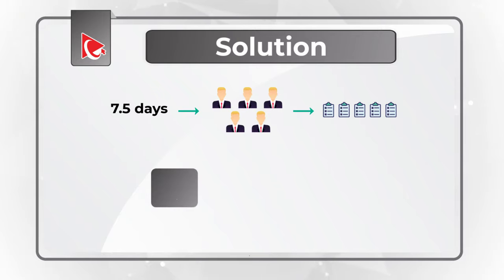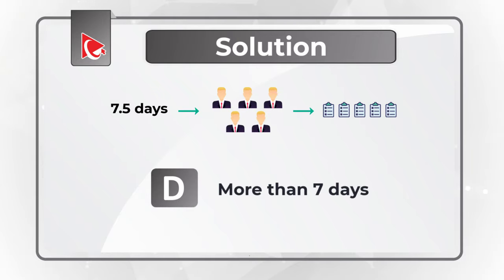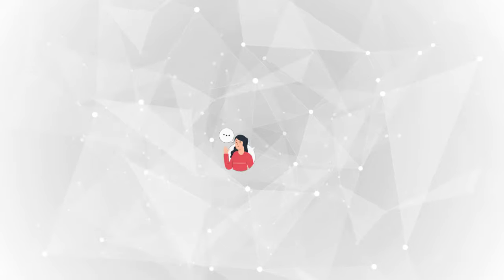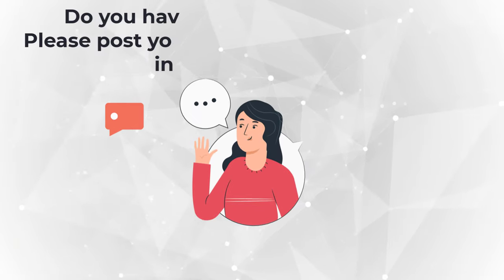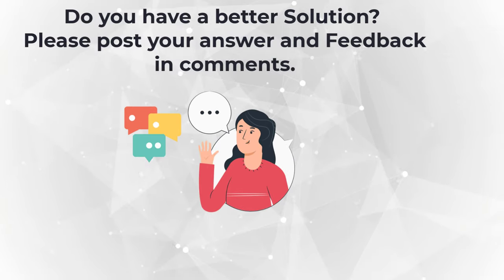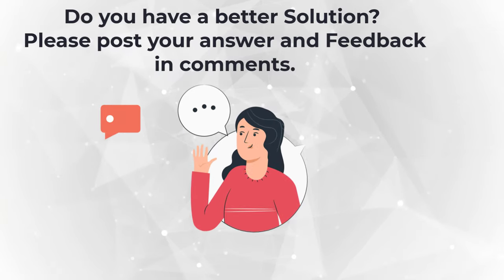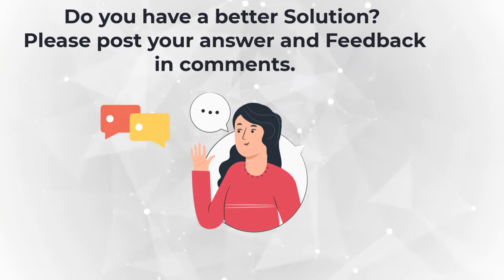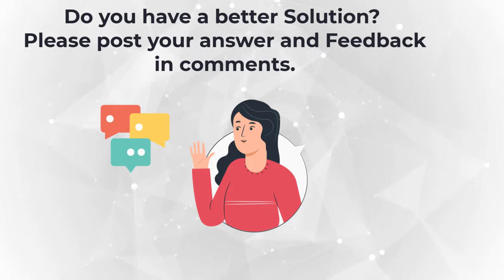So the correct choice here is Choice D. It will take more than 7 days to complete these 5 tasks. Hopefully you've nailed this question and now know how to answer similar problems on the test.